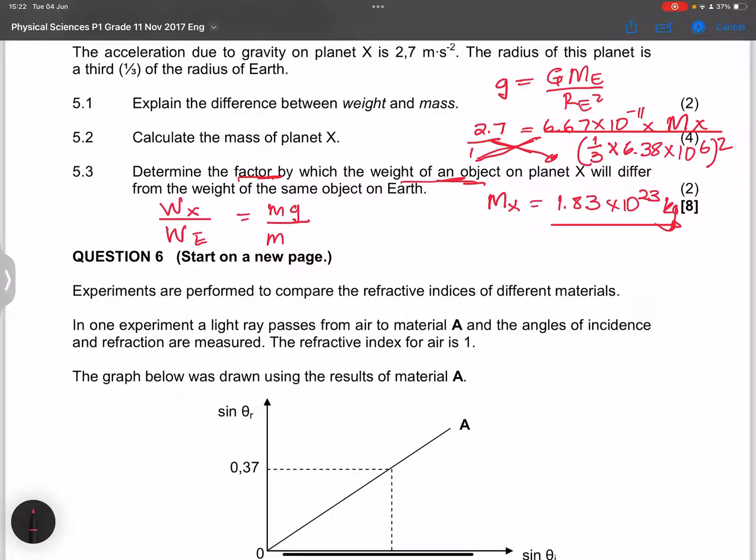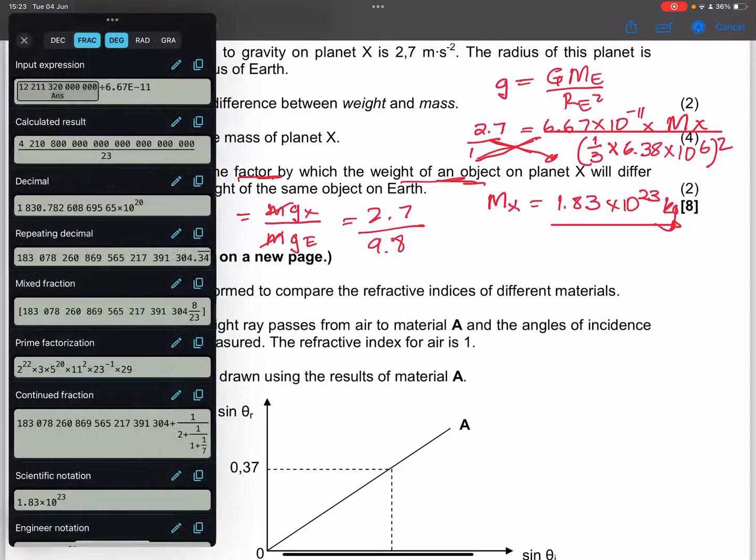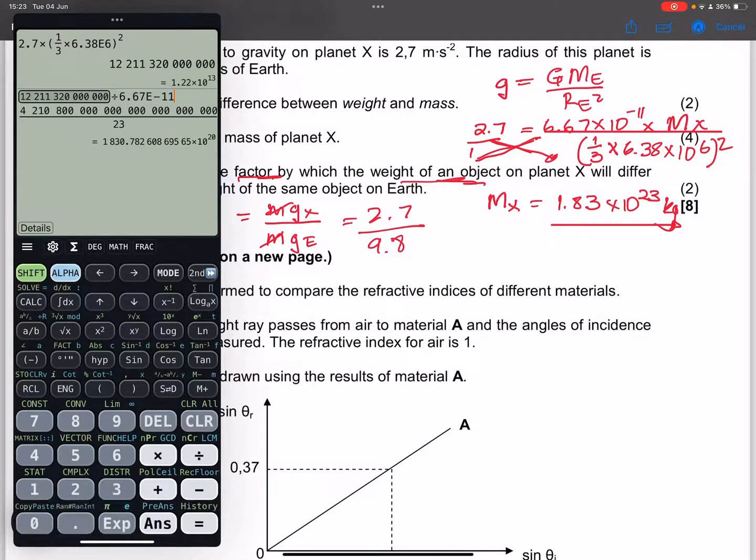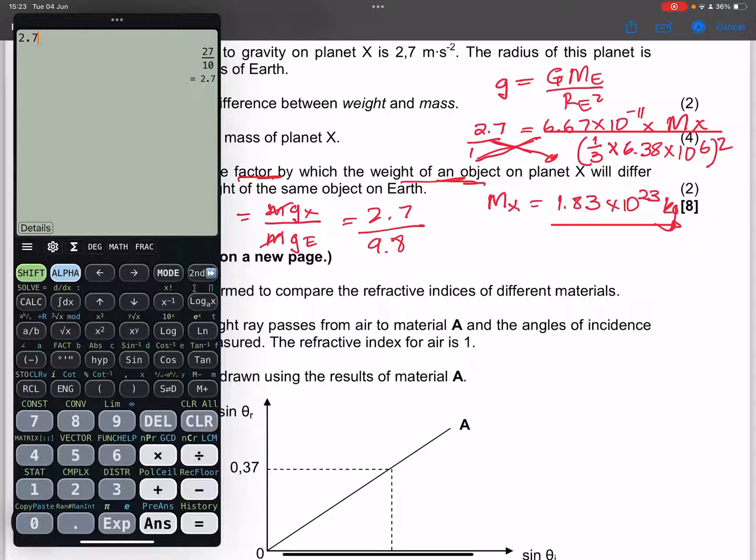So this is the gravitational acceleration on X. And this would be the gravitational acceleration on Earth. So what that simply means is that I can take the two gravitational acceleration values. So that's 2.7 divided by 9.8. And so that is the factor. So that's 2.7 divided by 9.8. And that means that the factor is 0.28.